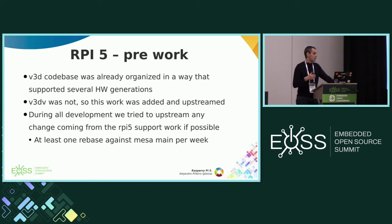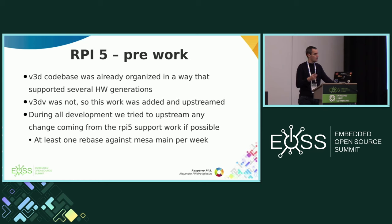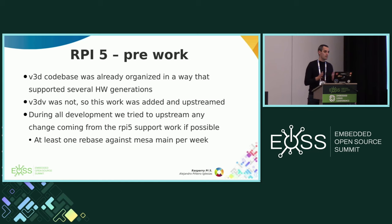The idea with the development is that even if we were focused on the support for the Raspberry Pi 5, any time we saw a change that made sense upstream, we sent it upstream. The idea is to reduce the delta — the difference — because at the beginning, to implement the support for the Raspberry Pi 5, we were working on a downstream branch. But the idea was to not let it get too big. And in spite of that, when we finished the support, we had about 120 patches. So we were always doing the effort to keep that set as small as possible. To avoid a lot of work rebasing against Mesa main at the end of development, each week we would rebase against Mesa main.